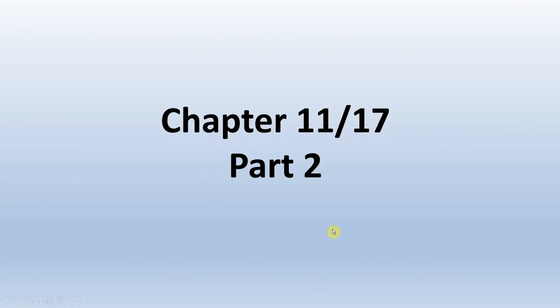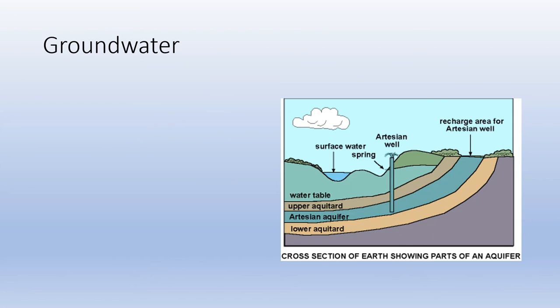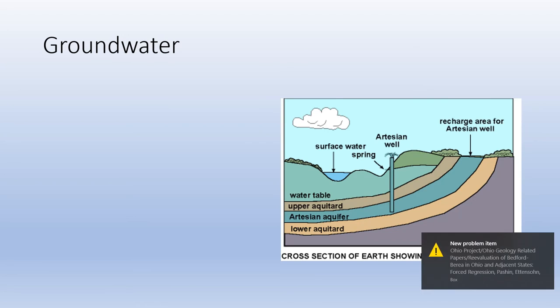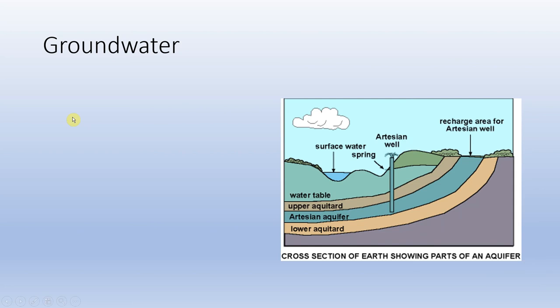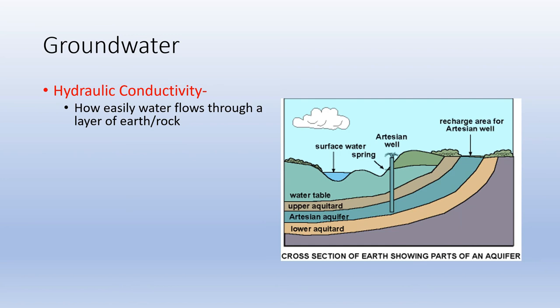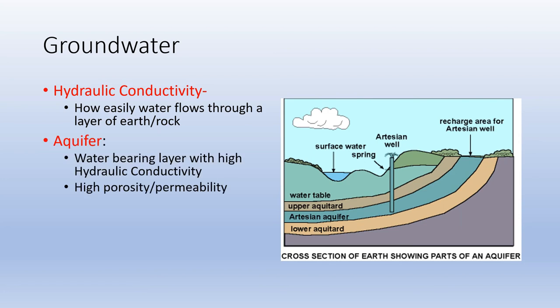Alrighty folks, welcome back to part 2 of chapter 11 for Geo 100 and chapter 17 for Geo 111, talking about groundwater. Groundwater is very important. Last time we discussed how groundwater makes up the majority of our liquid fresh water supply. As humans, we use almost exclusively fresh water, so groundwater is very important to us. A few definitions to make around groundwater. First of all, hydraulic conductivity. This is a measure of how easily water flows through a layer of earth or rock. It's essentially a measure of permeability and porosity.